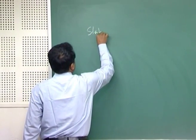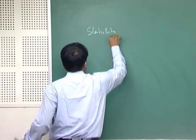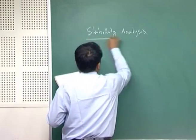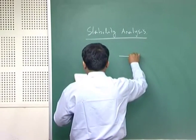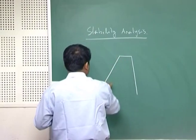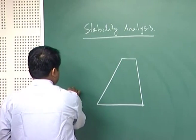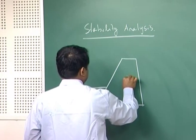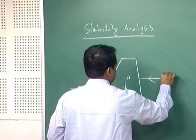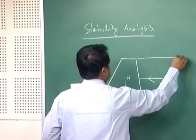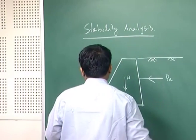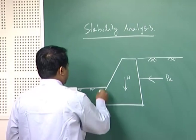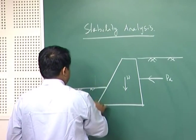Last class, we started this stability analysis. If I quickly redraw what has been done in the last class, a gravity retaining wall has been taken into consideration — a simple retaining wall without any backfill where the backfill is horizontal — and we looked at what forces act on it.